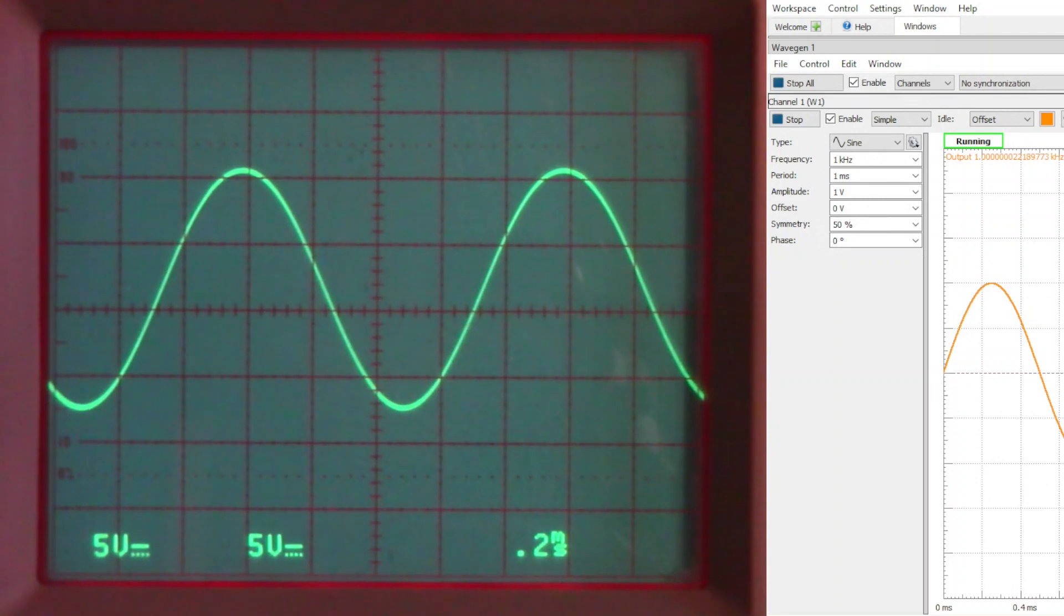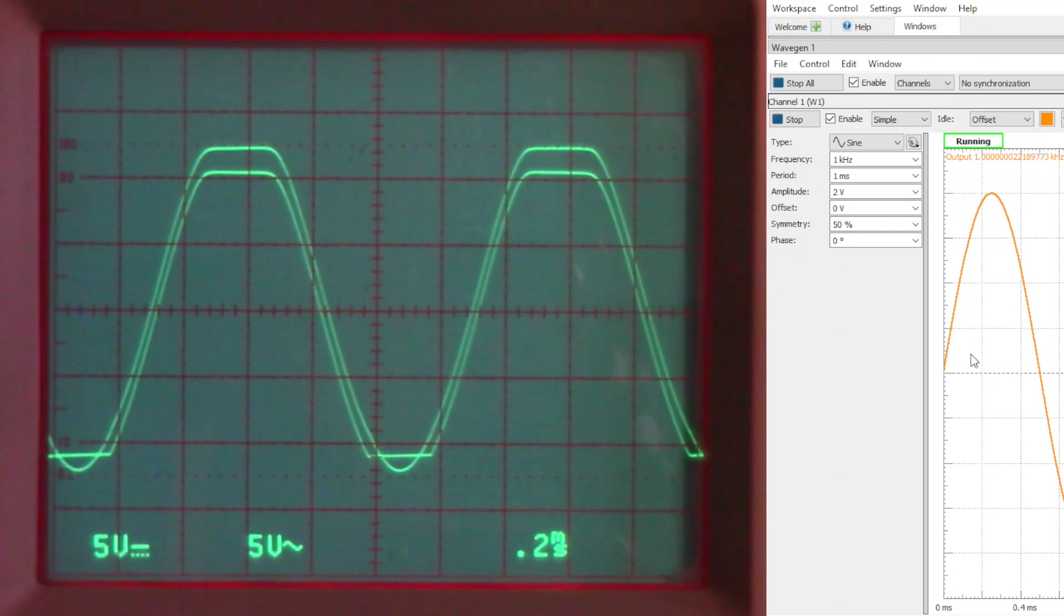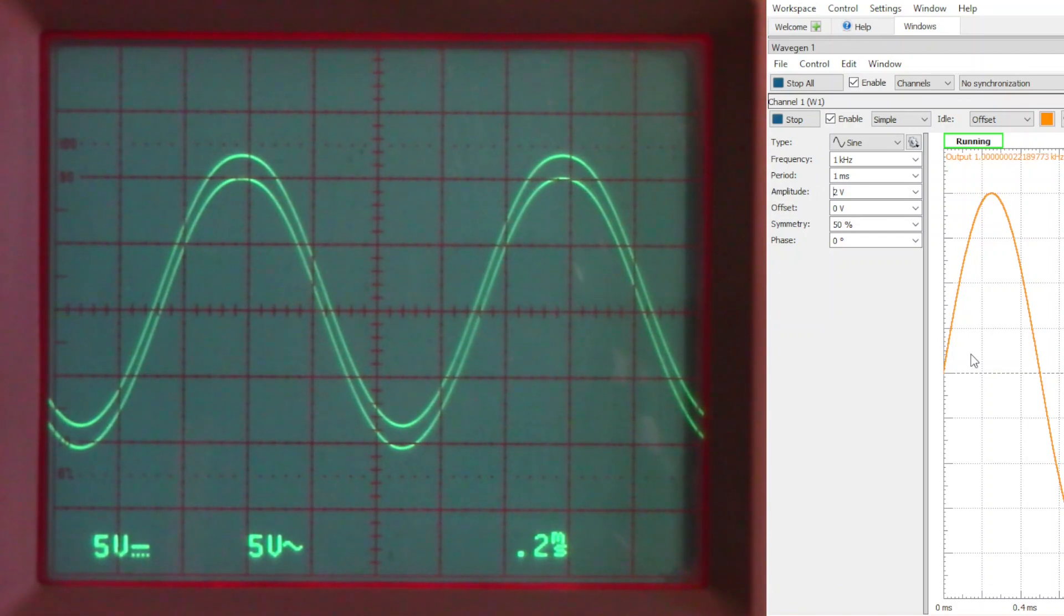At this point I'm going to move channel 2 so that it's looking at the 1k load and then I'm going to AC couple for convenience. We'll move this to the center graticule and then AC couple. Let's go ahead and push this a little harder. We've adjusted the function generator up to 2 volts and now I'm going to use the variable control to lower the signal slightly. Based on this it looks like we're able to produce a maximum of approximately 10 volts peak or 20 volts peak to peak from this particular amplifier.